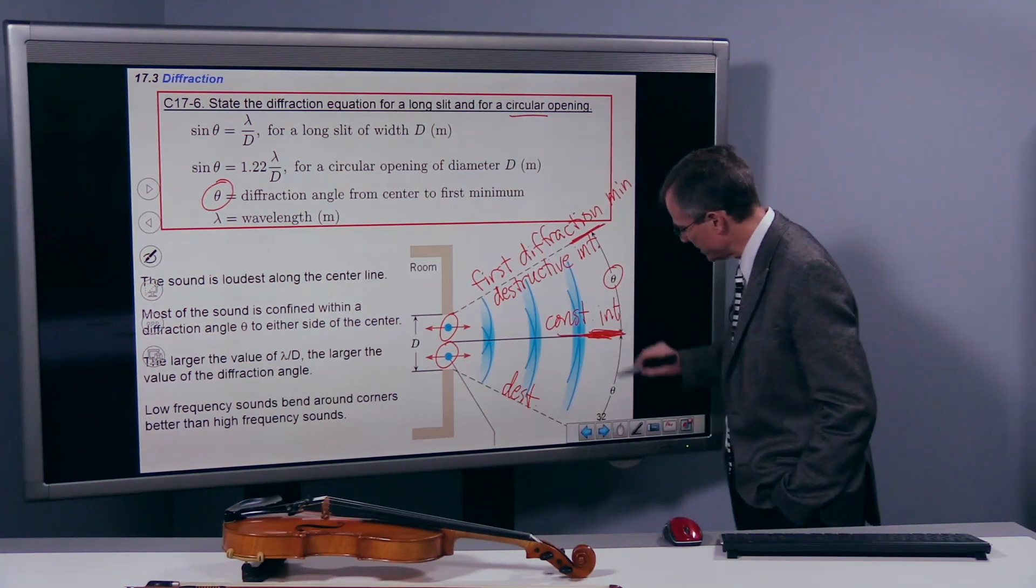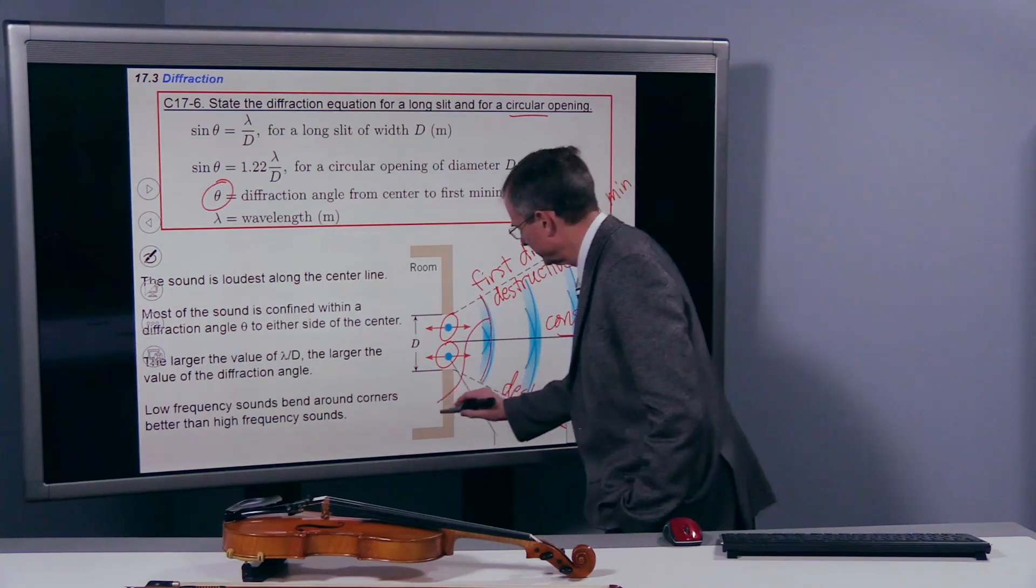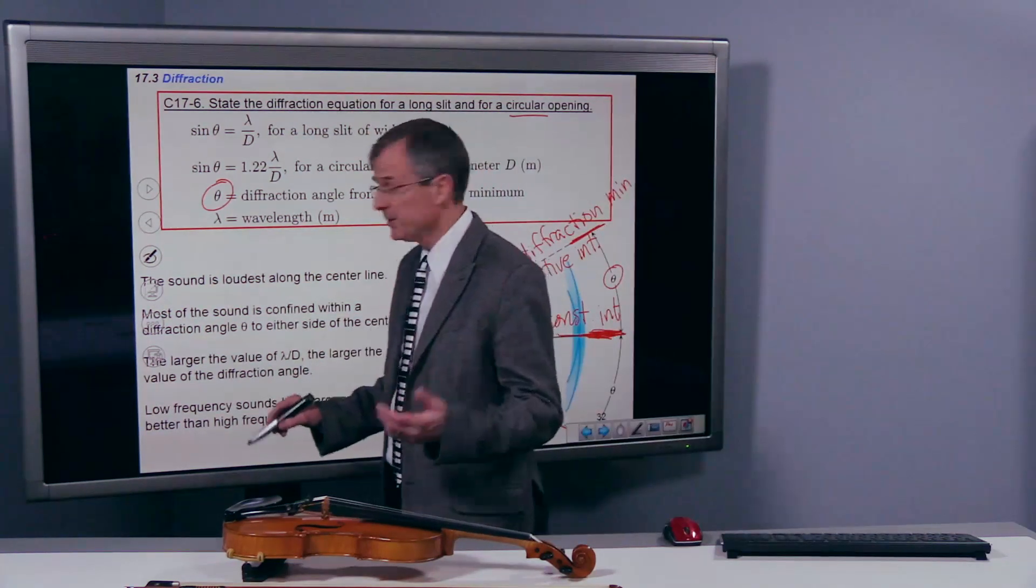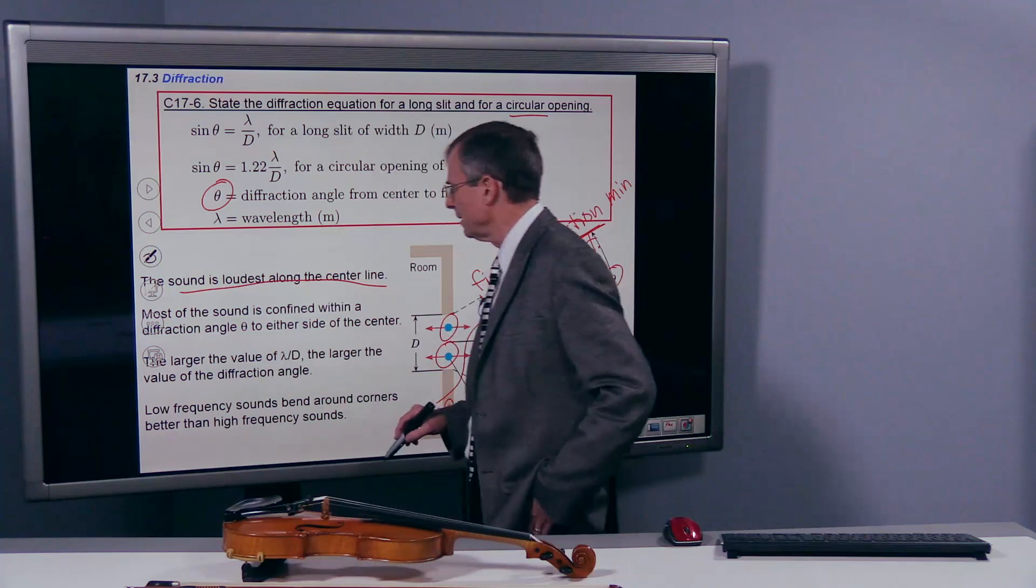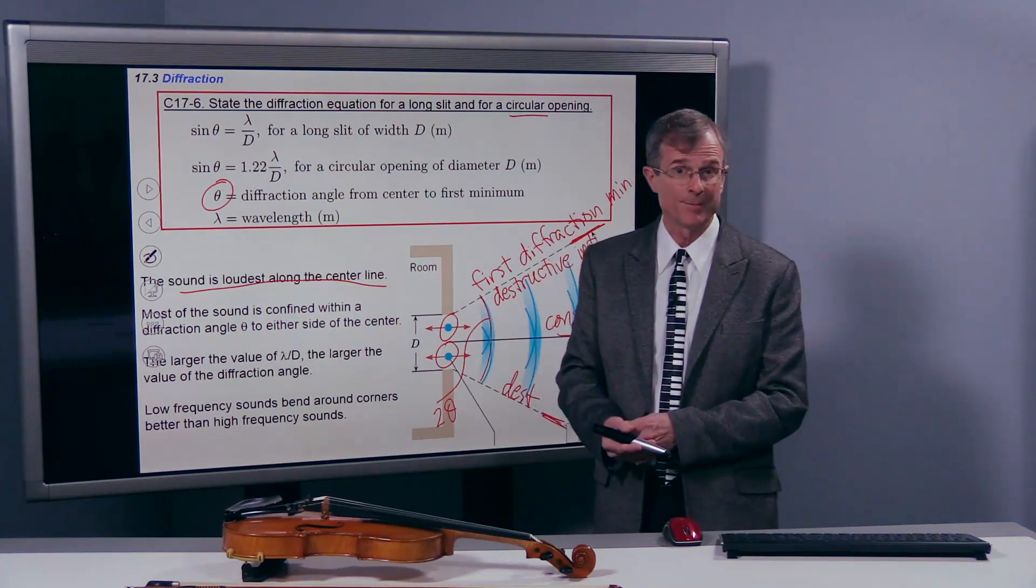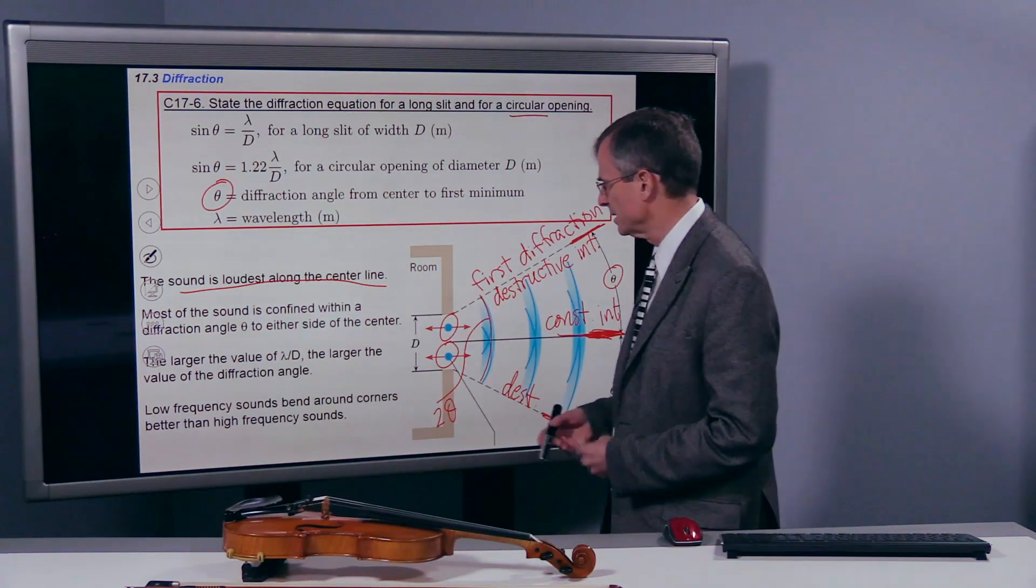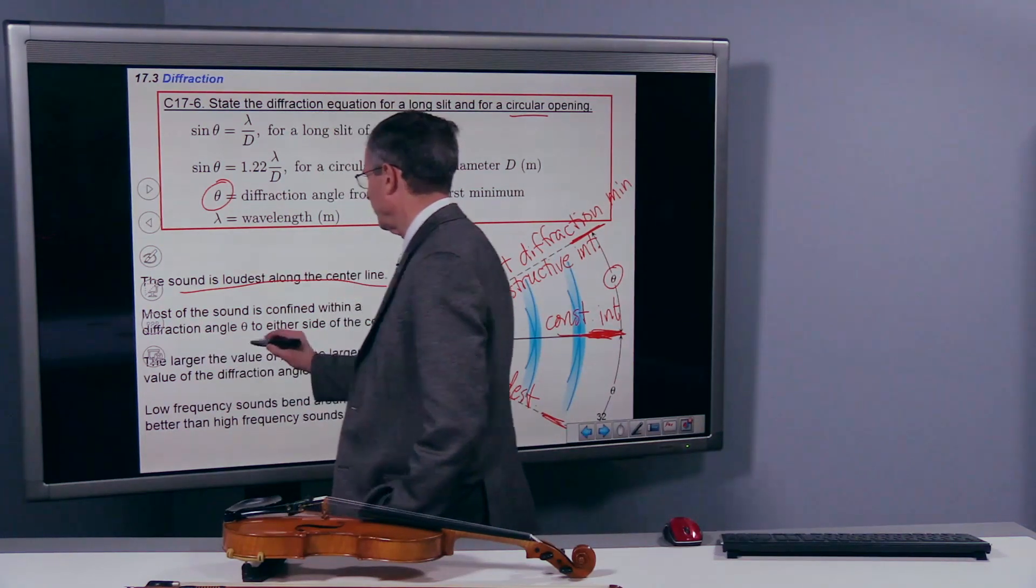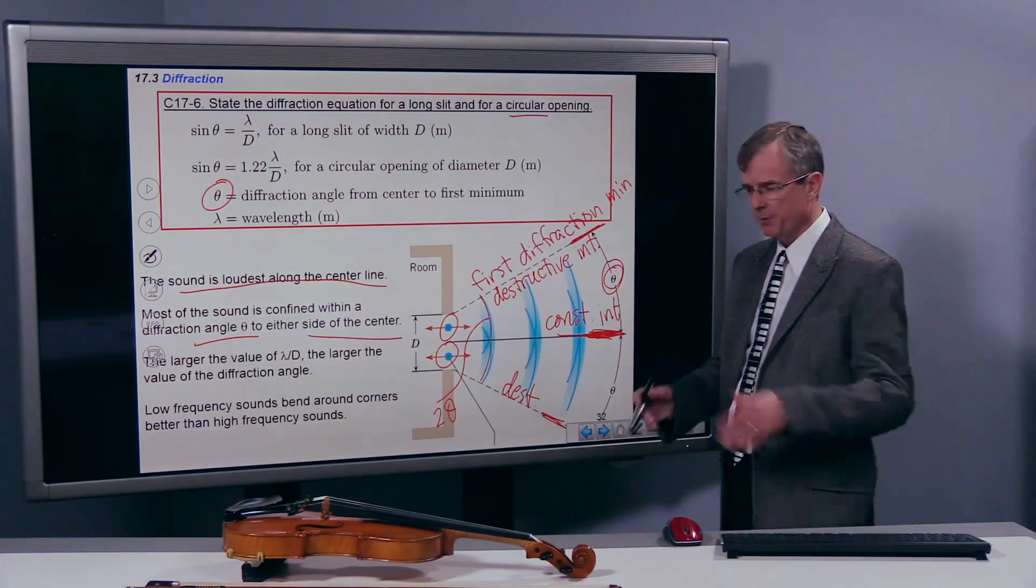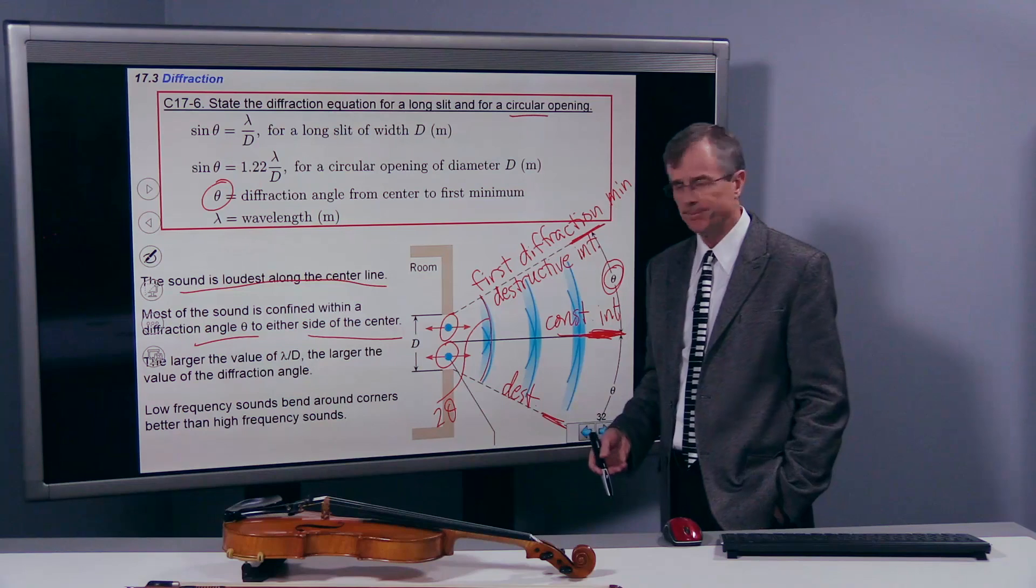This angle θ measures the angle between the center line and this first diffraction minimum. Alternatively, you can measure θ from the center line over to this other diffraction minimum. So the actual total angle between here and here is 2θ. And the sound, I think you can imagine, is loudest along the center line. Most of the sound is confined within the diffraction angle θ to either side of the center.